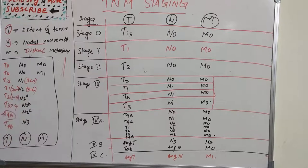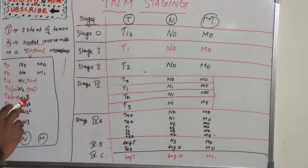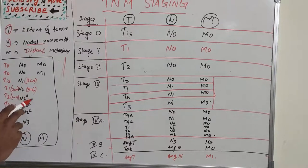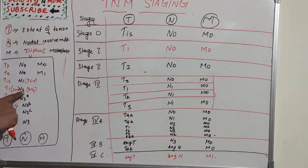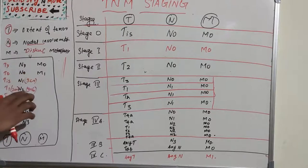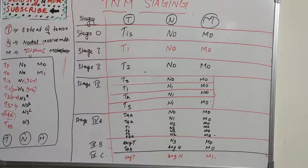N2A is metastasis in a single ipsilateral lymph node more than 3 centimeters but not more than 6 centimeters. There are various categories of N2 including ipsilateral and bilateral, with dimensions from 3 to 6 centimeters. N2A is single ipsilateral.